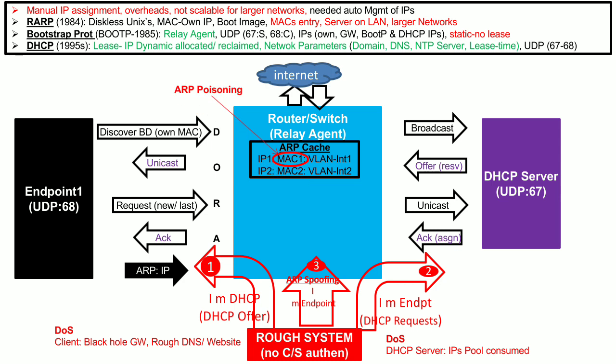By declaring this fake mapping, the rogue system poisons the ARP cache, which was previously pointing to the original MAC address. The original MAC address is replaced with the MAC address of the rogue system, so all traffic directed to that specific IP is now forwarded to the rogue system. The rogue system can also forward the traffic to the actual endpoint while monitoring it, which is why this attack is also known as a man-in-the-middle attack.